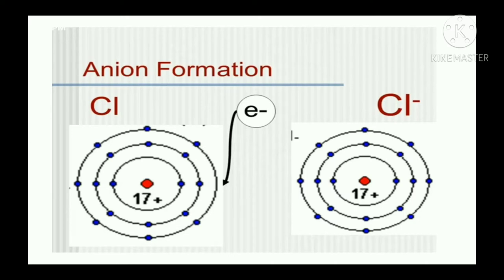The first example is chlorine. Cl is the symbol of chlorine. Chlorine has the electronic configuration 2, 8, and 7. In the last shell of chlorine — that is the valence shell — there are just 7 electrons. To form an octet (8 electrons), it requires 1 electron. So it will acquire that 1 electron, giving it 1 negative charge. This is the chlorine anion. After taking 1 electron, its electronic configuration becomes 2, 8, and 8.